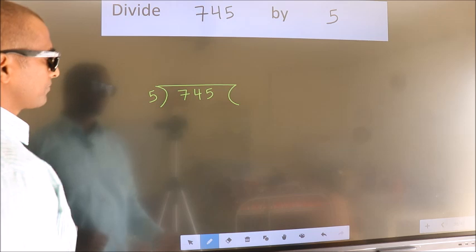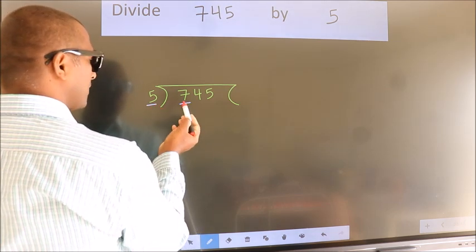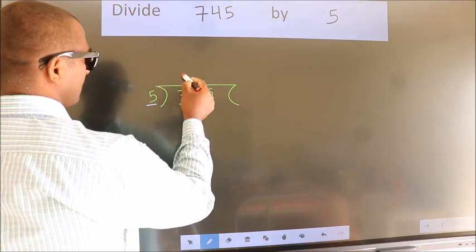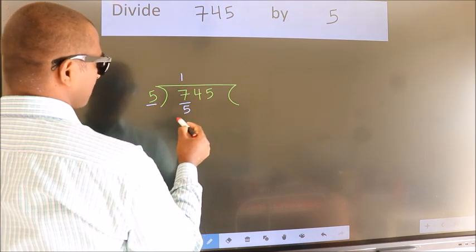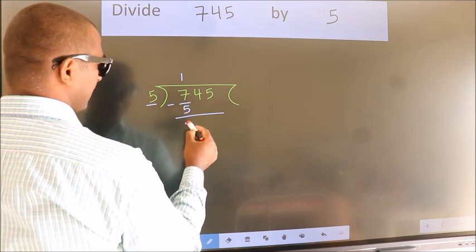This is your step 1. Next, here we have 7, here 5. A number close to 7 in 5 table is 5 once 5. Now we should subtract. We get 2.